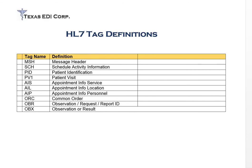If you're going to set an appointment, you might have some AIS or AIL records. But it's very likely that you'll have a PID segment, which holds patient information, or PV1, which holds patient visit information. There's also ORC, OBR, and OBX for observation, request, report, or results. ORC is for common order. I've put a little reference sheet there so you can take a look at it.